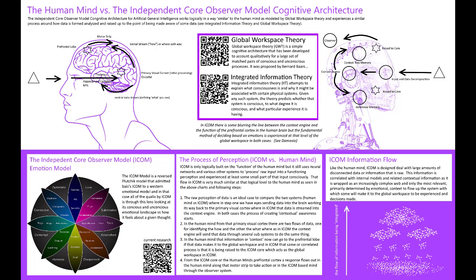First let's set some definitions and get that out of the way. Computer science, or the AI community generally, would probably define AGI as an artificial intelligence not specialized for one specific task, that can do lots of different tasks. Most of what you hear about nowadays around artificial intelligence is better thought of as narrow AI, meaning it is designed to learn and/or execute a single task or set of related tasks.